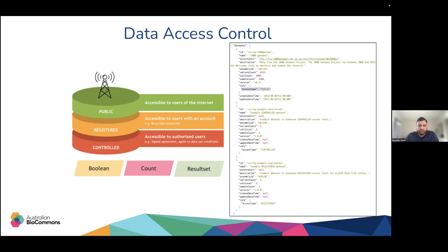The beacon can also return responses at different granularity levels: a Boolean response indicating whether data exists or not; a count — just the number of matching records; or a result set where every record matching the query is returned in complete form.